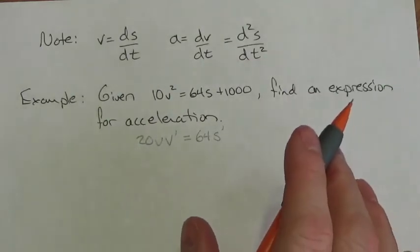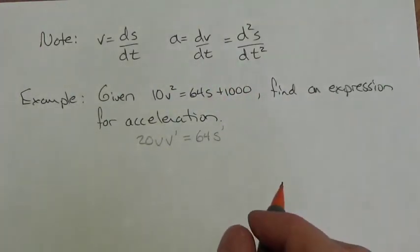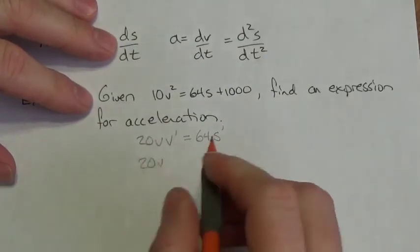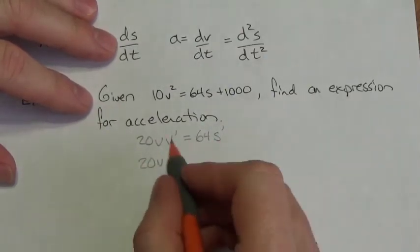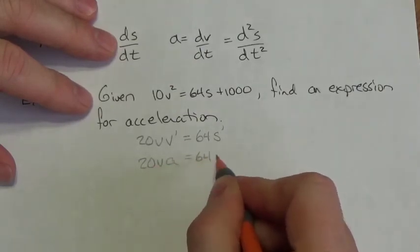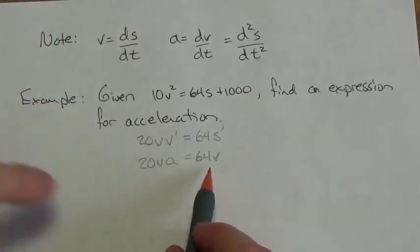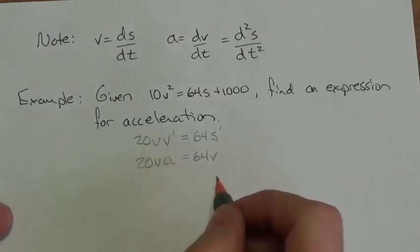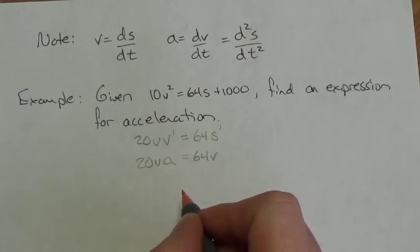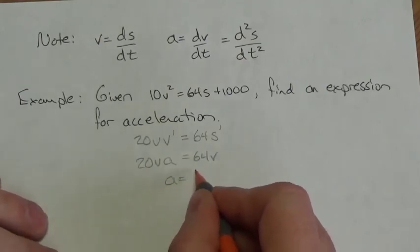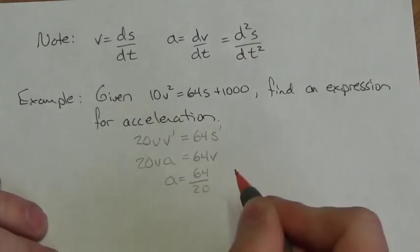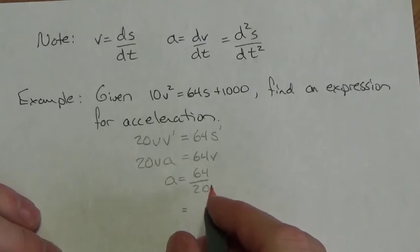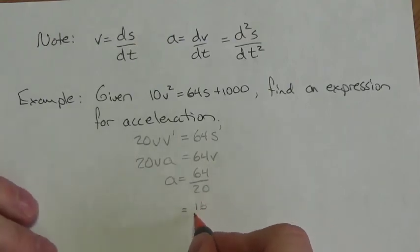Every time we get to this part, people forget that the derivative of a constant is 0, so please be on the lookout. Now I'll rewrite, replacing what I know these derivatives are equal to: 20v·a = 64, and s′ is v. Notice there's a common v on both sides, so I can cancel those and divide, then bring the 20 over. Acceleration equals 64 over 20, and simplifying by dividing by 4 gives 16 fifths.